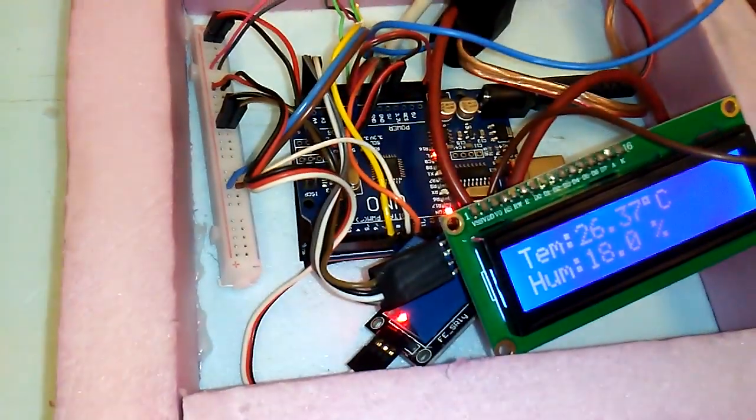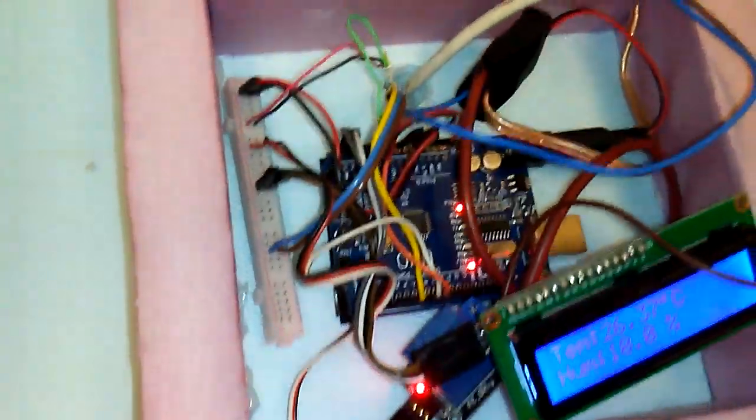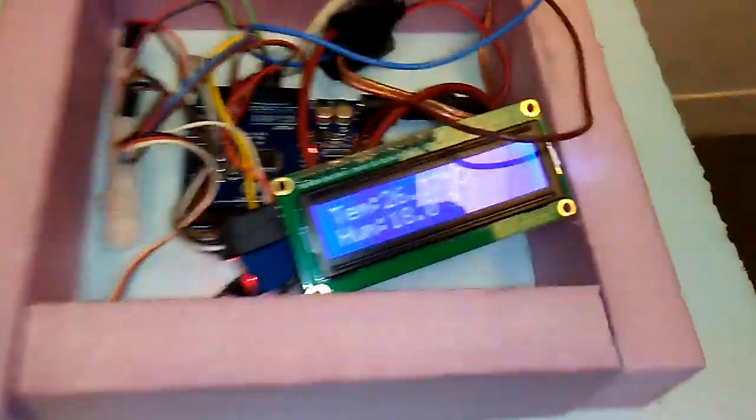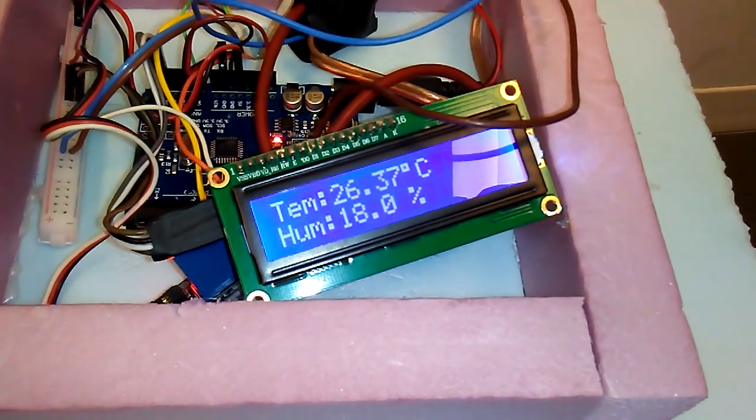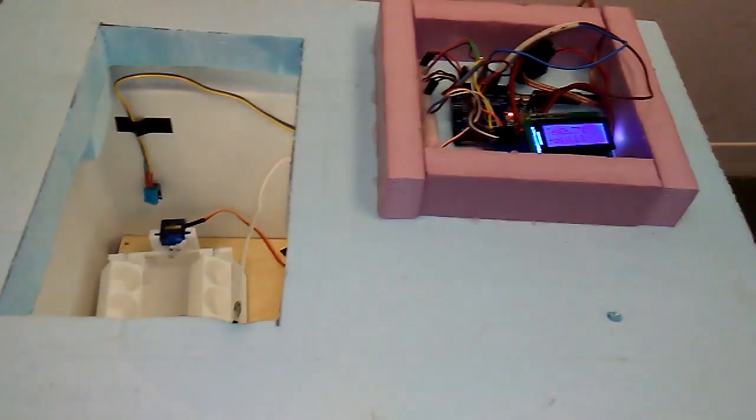So I'm using that to basically tell me the temperature and then to tell the Arduino to shut off or turn on the light bulb. So right now I just started it, it's at 26.37 degrees with 18% humidity because obviously the top is open, but it will build up the heat.